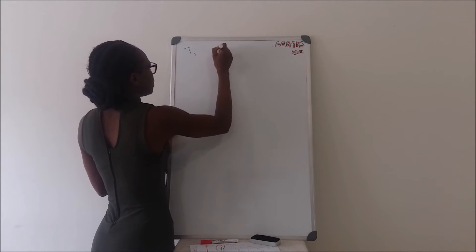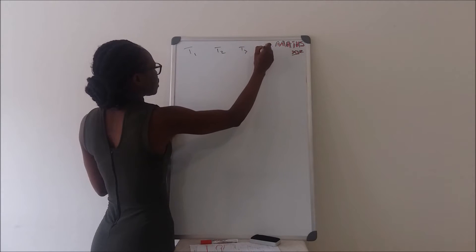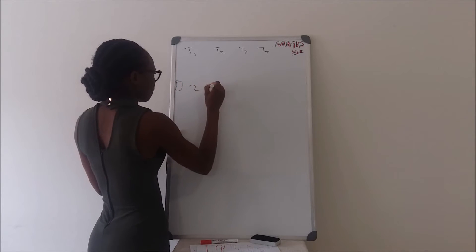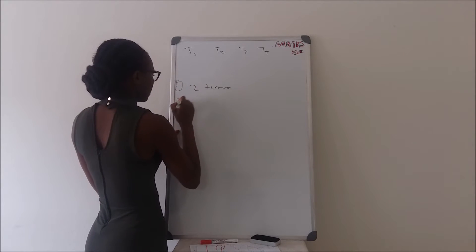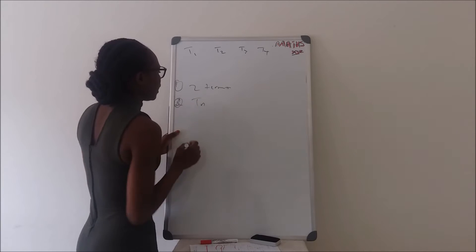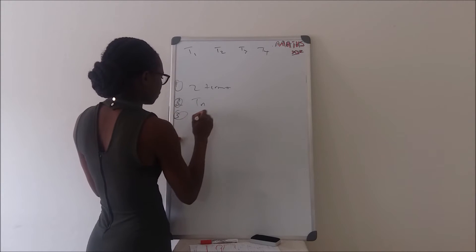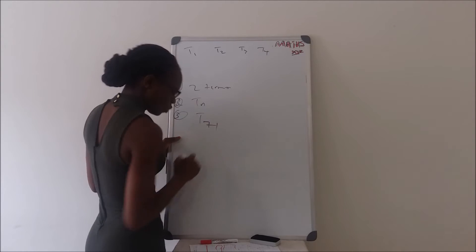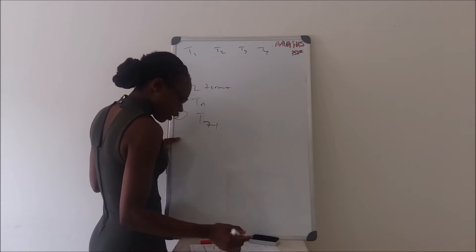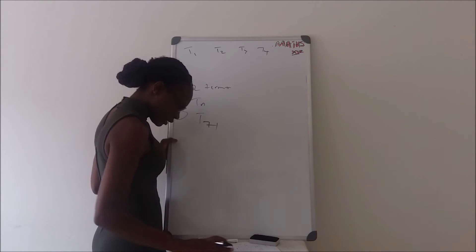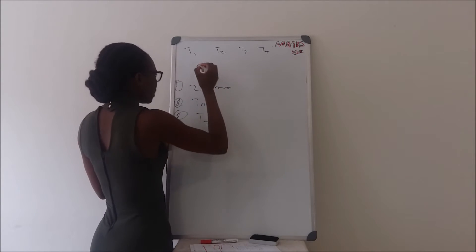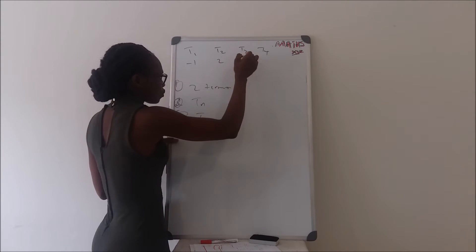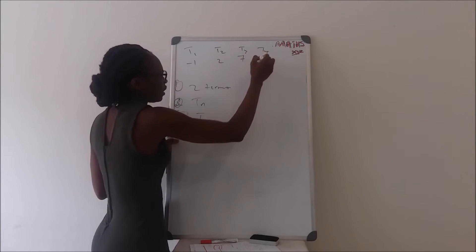This question has T1, T2, T3, and T4. It says: find the next two terms. The second question says find Tn, and the third question says find T71. So we have T1 equals negative 1, T2 equals 2, T3 equals 7, and T4 equals 14.